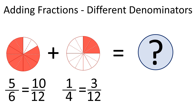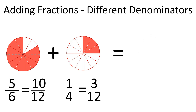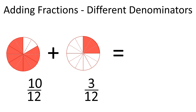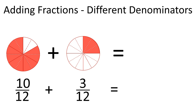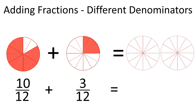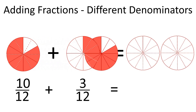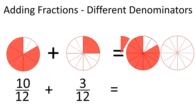Thus, we can rewrite five-sixths as ten-twelfths and one-fourth as three-twelfths. As each fraction now has the same denominator — that is, the same number of parts in a whole — we can add our parts together. Ten-twelfths plus three-twelfths equals thirteen-twelfths.